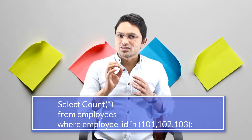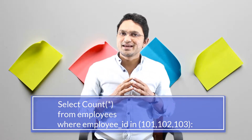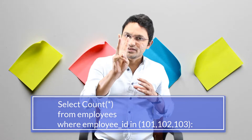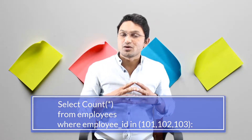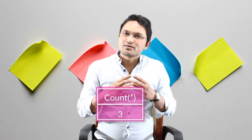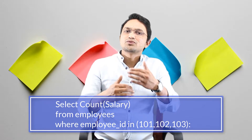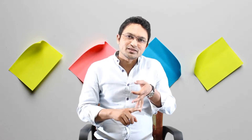If I modify this query to SELECT COUNT(*) FROM employee WHERE employee_id IN (101, 102, 103), then only three rows will be selected, so the output will be three. Instead of the star, you can also pass a column name — the output will be the same, because the number of rows will be the same regardless of whether you pass star or any column name.